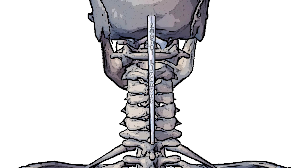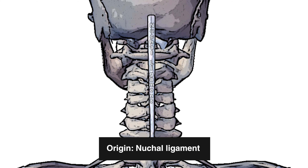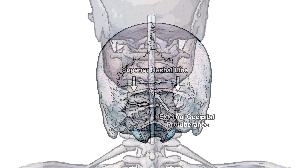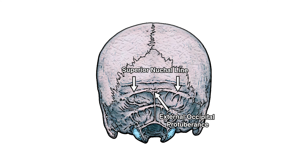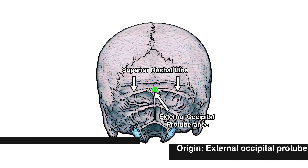Labeled here is the nuchal ligament, which comes down and runs along the back of the spinous processes, connecting onto the occipital protuberance of the skull. This forms another origin point of the trapezius muscle as it moves up the back and neck. Here we have a view of the posterior of the skull and you can see the external occipital protuberance, which is where the nuchal ligament connects to.